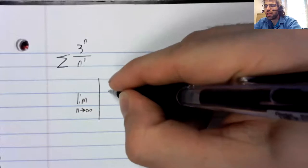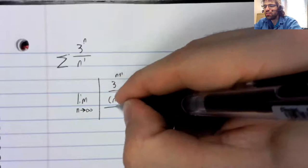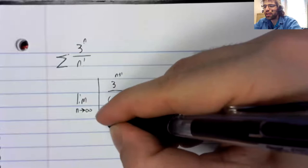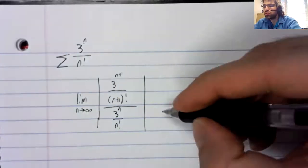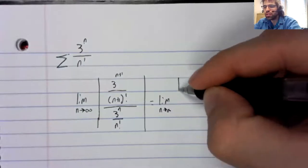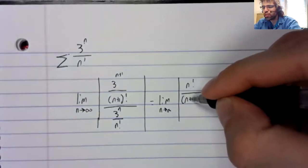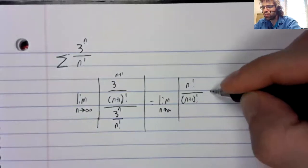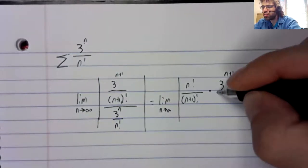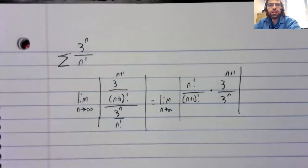When you see both of them in the same place, it's crying out to at least try this. The limit as n goes to infinity: n factorial over n plus 1 factorial times 3 to the n plus 1 over 3 to the n.